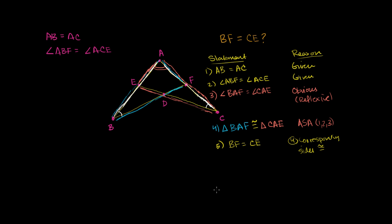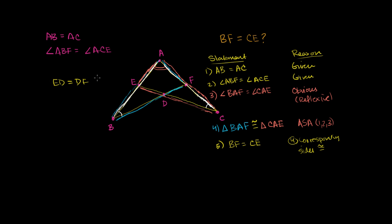Now let's take it up another notch. Let's see if we can prove whether ED is equal to DF — I put a question mark there because we haven't proven it yet. So I want to prove that this short segment ED is equal to DF. It might not be so obvious at first how to figure out some type of congruency, but we already have some information.